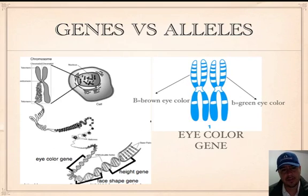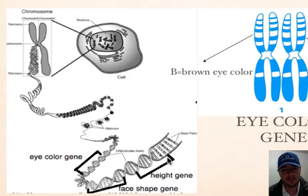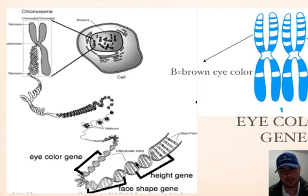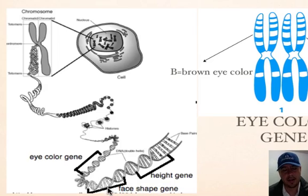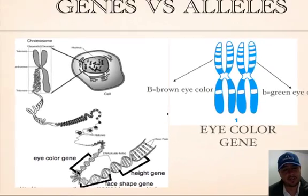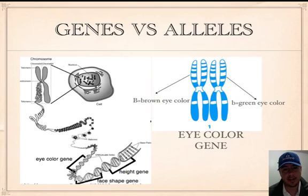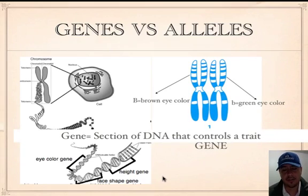Now let's explore genes. In the DNA there are sections or pieces of DNA that control our traits — that's what a gene is. Here we have three genes. This section is in charge of your height, this section controls your face shape, and this section controls your eye color. So genes are sections of DNA that control a trait.